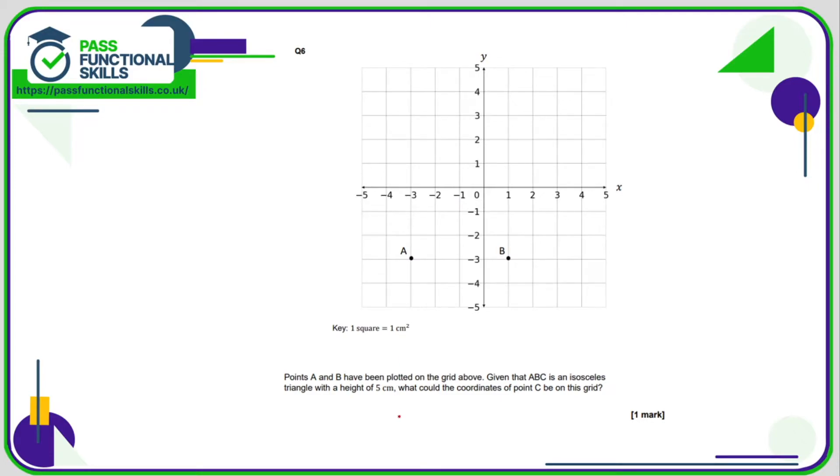Question number six. We're drawing an isosceles triangle, and one of the key properties, or the key property of an isosceles triangle, is that it has two sides which are the same length. We know that this triangle has a height of five, so I'm going to work out the height of five, so one, two, three, four, five. So the other point is going to be somewhere on this line. Now to create an isosceles triangle, I need to plot this point so that A to C and C to B are identical. Now the distance from A to B is one, two, three, four. So what I need to do is plot C so it's exactly halfway between A and B but on this line.